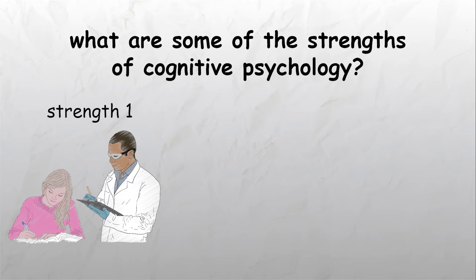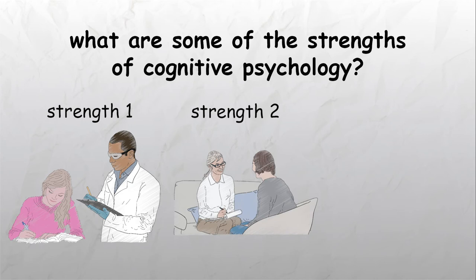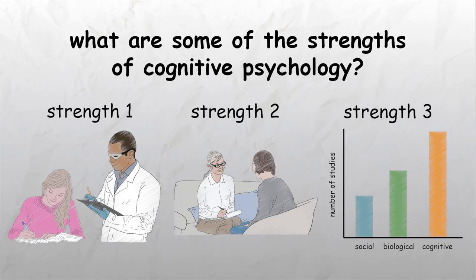A further strength of the cognitive approach is the useful contributions that have arisen from it. For example, many modern types of therapy are based on the cognitive approach. Understanding cognitive processes allows us to help people improve their cognitive processes such as memory and language. Furthermore, the cognitive approach has become the dominant approach in psychology, particularly since it has become allied with neurology.